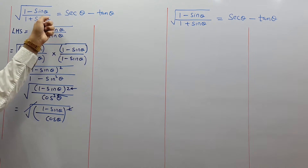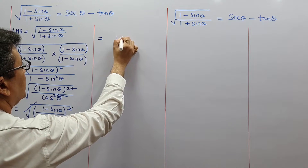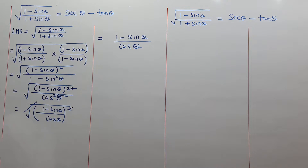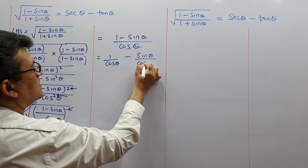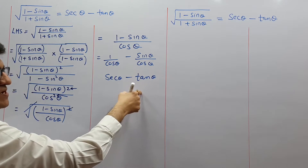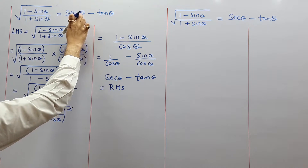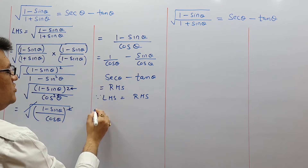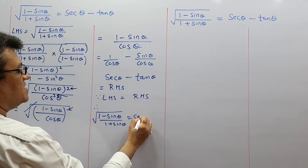Since this is a root-to-non-root sum, the root had to be cancelled at one point. After cancelling the root we have (1 - sinθ)/cosθ. Now split the denominator: 1/cosθ - sinθ/cosθ. What is 1/cosθ? Secθ. What is sinθ/cosθ? Tanθ. Do mention the reasons. So we get secθ - tanθ, which is our RHS. Since LHS = RHS, we write: √((1 - sinθ)/(1 + sinθ)) = secθ - tanθ. This completes Method 1.